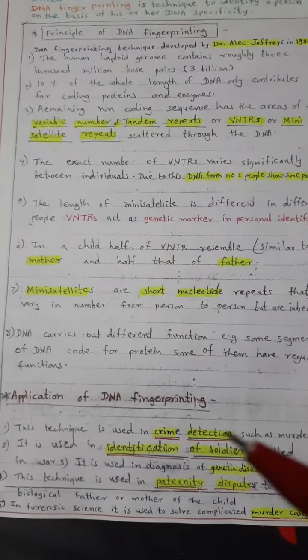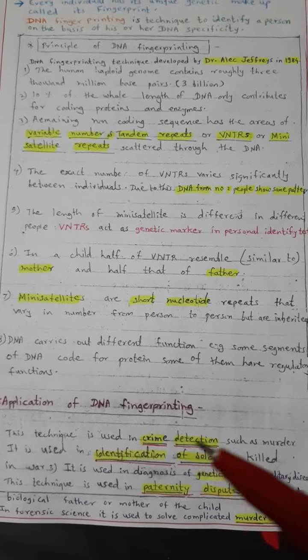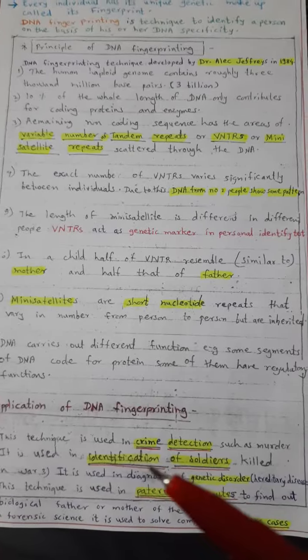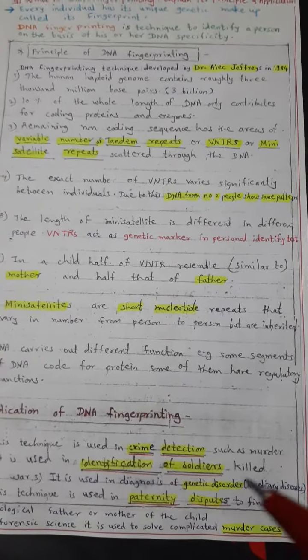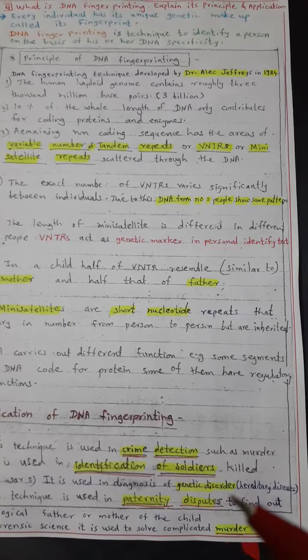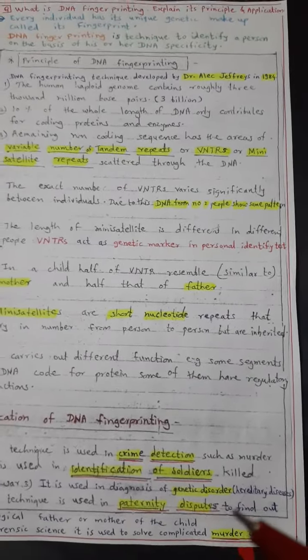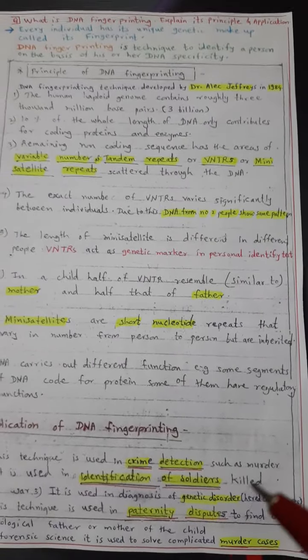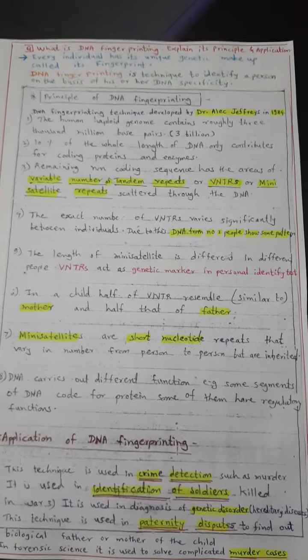The application of DNA fingerprinting: it is useful in crime detection, useful for identification of soldiers who are killed. It is used in genetic disorders and paternal disputes.